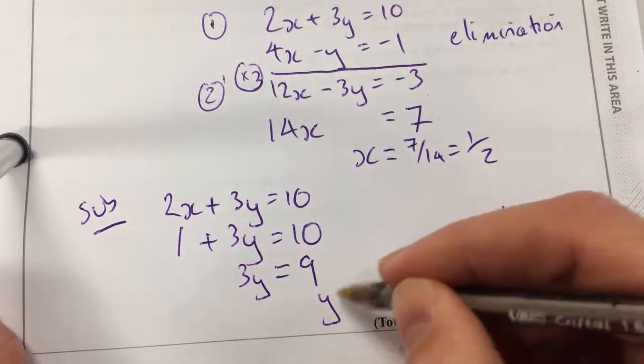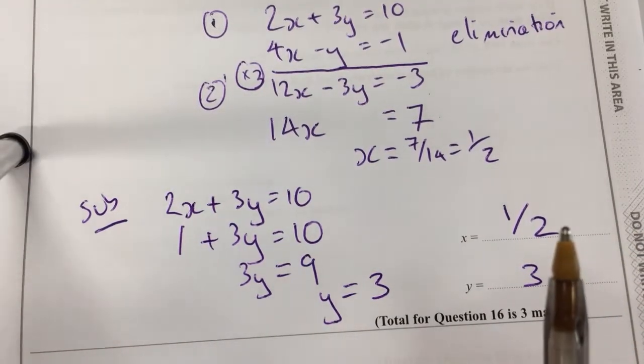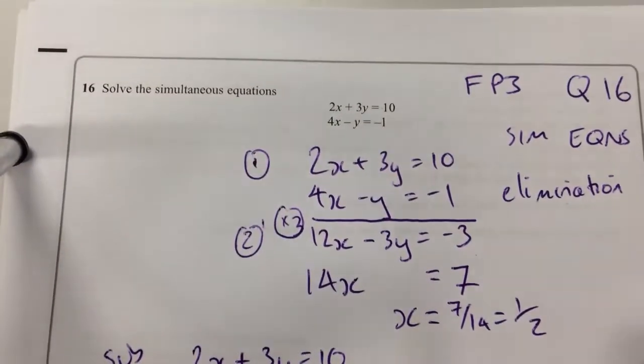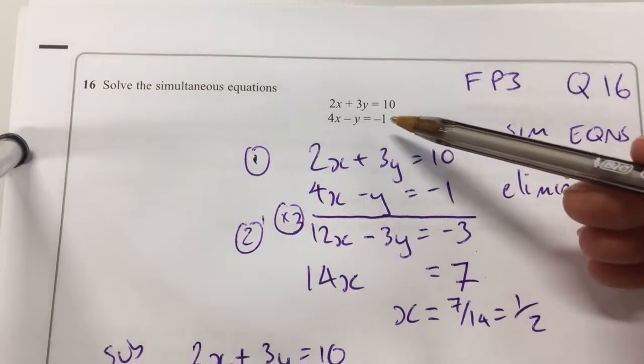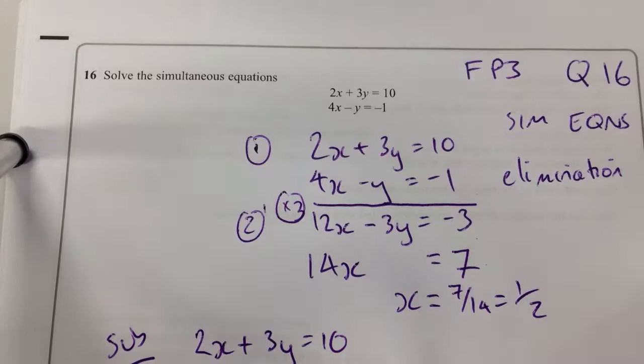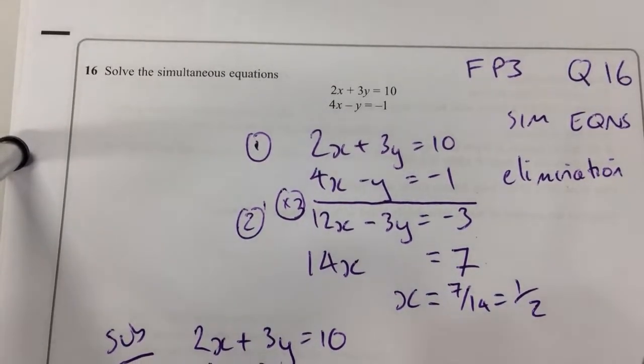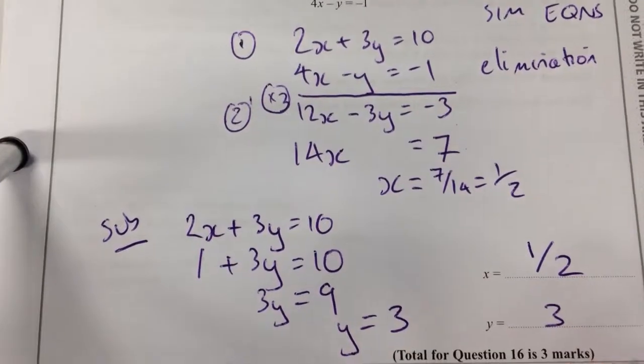So y is equal to 3. Fantastic. And I could check my answer by plugging it back into one of the other ones. 2 minus 3 is minus 1, so I know it's correct. So that's simultaneous equations using elimination and substitution.